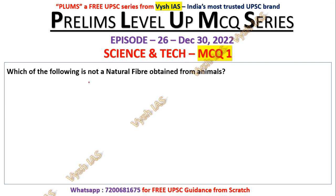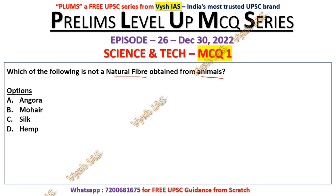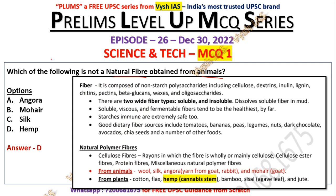The first science and tech question for the fourth week is: which of the following is not a natural fiber obtained from animals? Options are angora, mohair, silk, and hemp. These terms appear in science textbooks, but you don't need to read the full textbook — a good test series will cover all the important things, as UPSC frames questions based on past patterns.